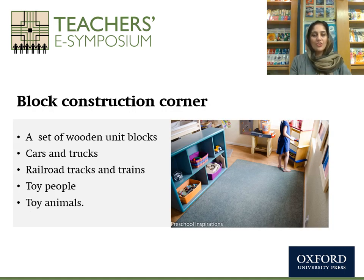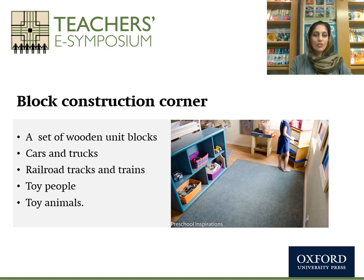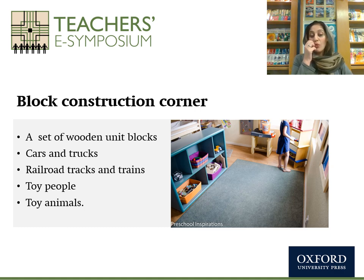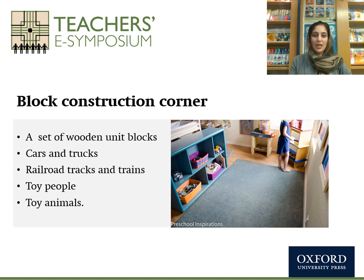Now I'll share a quick checklist for constructing your different learning corners. For the block construction corner, you can have a set of wooden unit blocks, cars and trucks, railroad tracks and trains, toy people, and toy animals such as dinosaurs or farm animals. This helps kids explore their creativity, critical thinking — what they can make out of those blocks, how to stack and balance them — improving not just cognitive skills but also fine and gross motor skills.